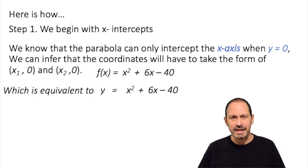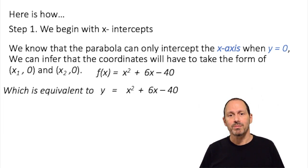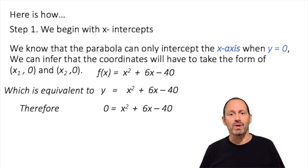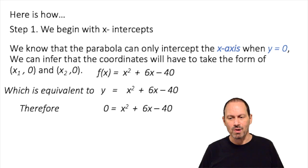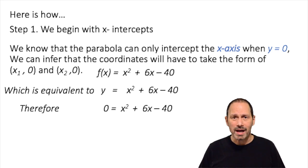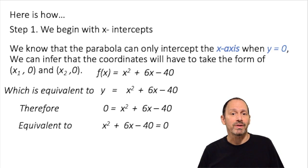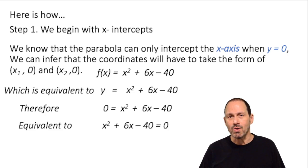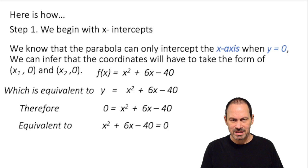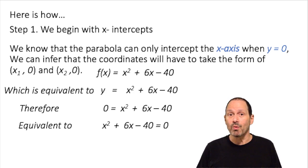For the purpose of finding the intercepts, we want to express this as an equation: y = x² + 6x − 40. Now we know y is 0, therefore 0 = x² + 6x − 40. All we have done is replace y with 0, because we know that when the parabola intersects the x-axis, y must be 0. This is equivalent to x² + 6x − 40 = 0. All we've done is move the 0 from one side of the equation to the other — if a equals b, then b equals a.